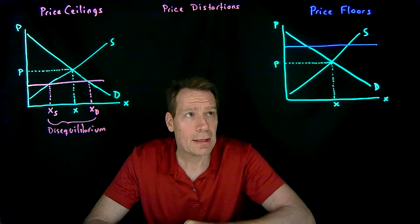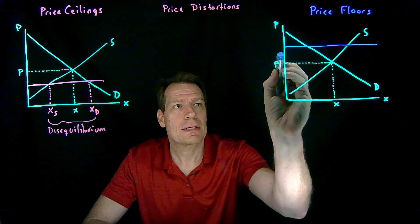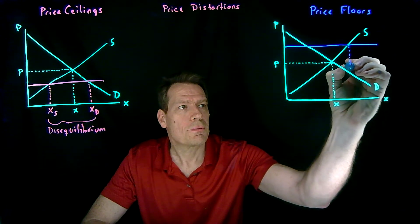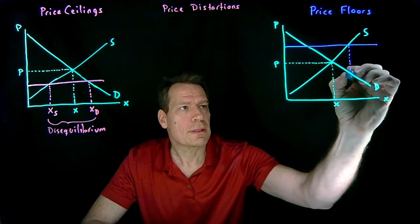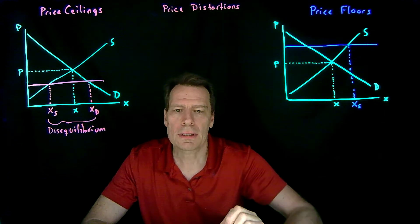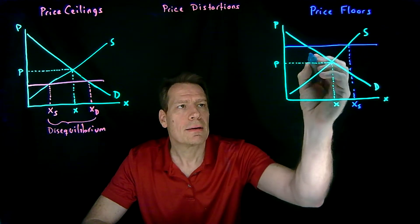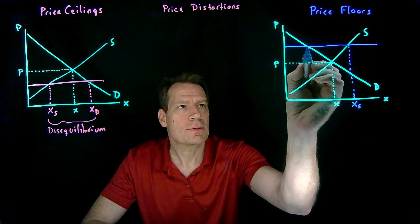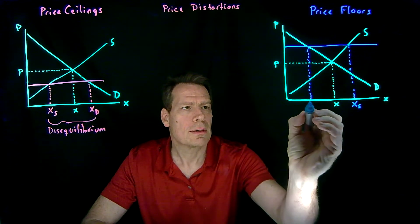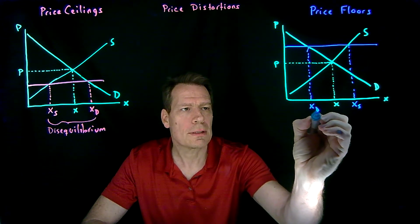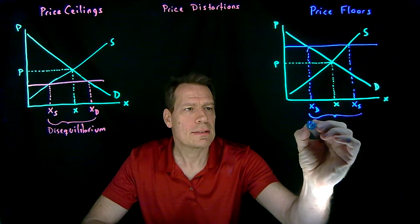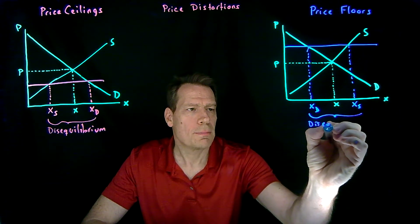Similarly, in the price floor case, the price is set above the equilibrium price, which means firms would love to produce more at that higher price, so we have an increase in the quantity supplied. But consumers don't want to buy as much at that higher price, so we have a decrease in the quantity demanded, again giving us a disequilibrium.